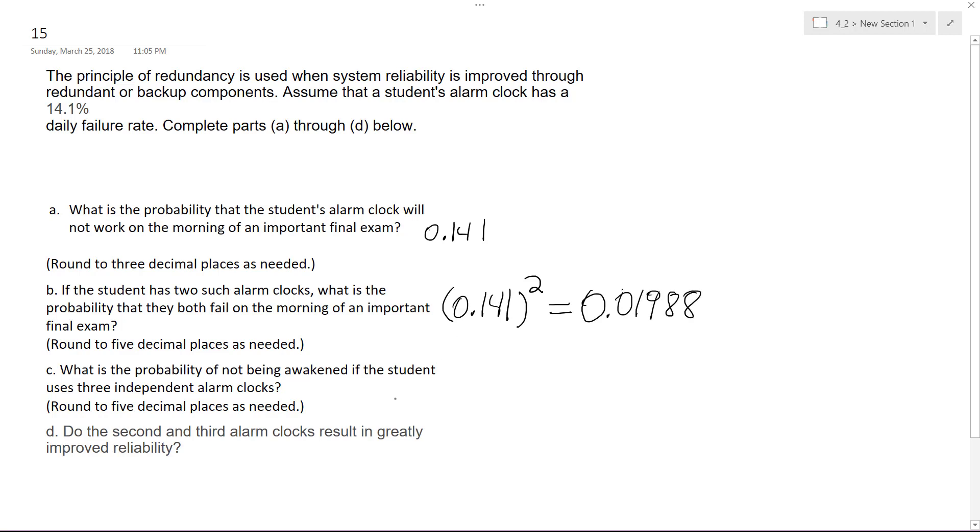What is the probability of not being wakened if the student uses three independent alarm clocks? In this instance it's going to be 0.141 raised to the third. Because what you're doing is you're multiplying the probability times each alarm clock, so in this instance it becomes 0.0028.